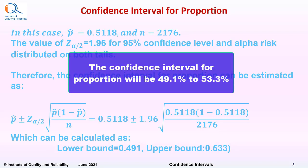So while the proportion in the sample was 51.18%, it could be as low as 49.1% or as high as 53.3% in the city of Bombay for the children.